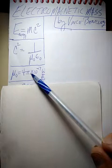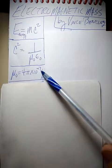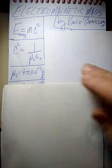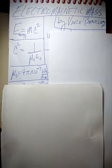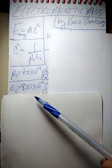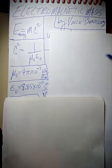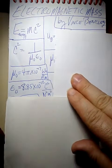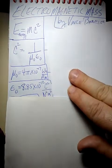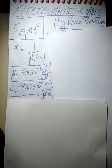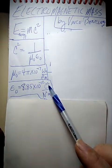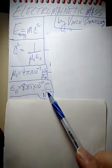Mu naught is equal to 4 pi times 10 to the minus 7 Webers per amp meter. And epsilon naught is equal to 8.85 times 10 to the minus 12 Coulomb squared divided by Newton meters squared.